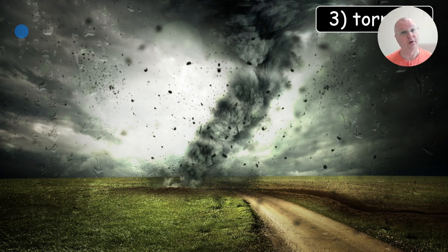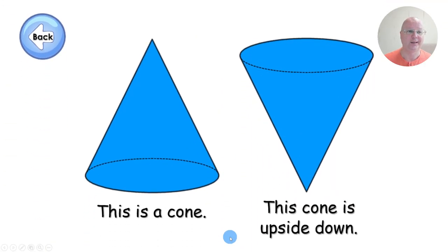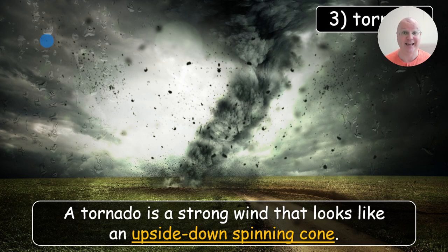The next disaster in this lesson is a tornado. What is a tornado? A tornado is a strong wind that looks like an upside-down spinning cone. If you click on this link, it takes you to a slide which explains two words: a cone and upside down. Let's go back — would you like to see a tornado? I made this video because kids love videos, and it's a great illustration of what a natural disaster may look like.